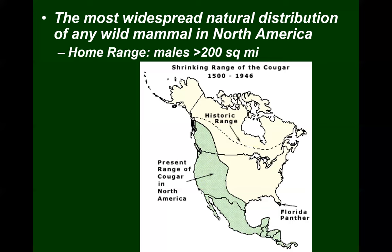The tan is where cougars used to be; the green is where they are now — primarily in the west. They're not here in the east. There's a little patch in Florida, and sometimes vagrants will wander to the east, but there are no populations in the east besides the one in Florida.